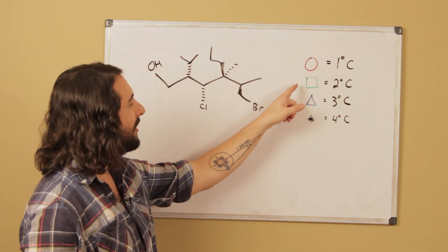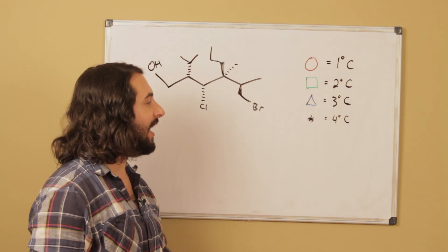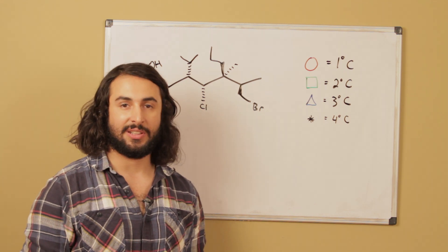you a red circle on the primary carbons, a green box on the secondary, a blue triangle on the tertiary, and an asterisk for any quaternary carbon. So go ahead and see if you can label all these carbons on this molecule.